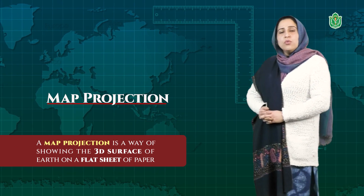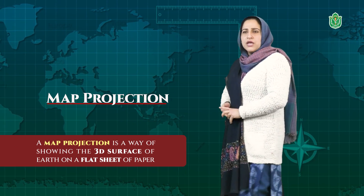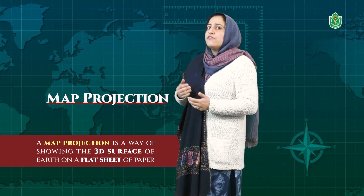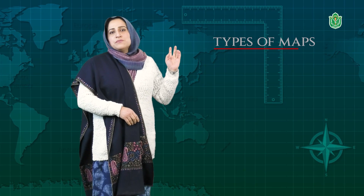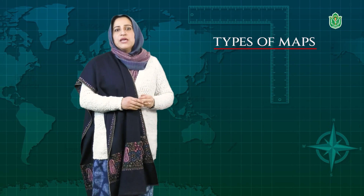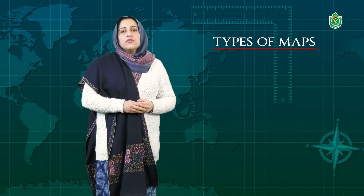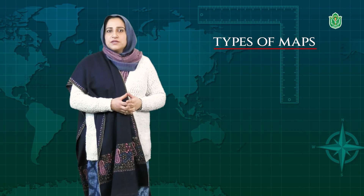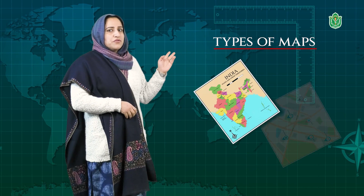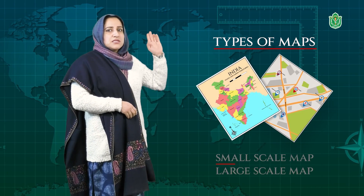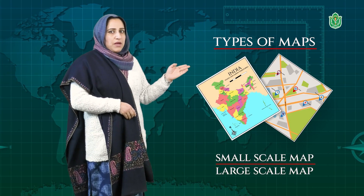Now we will come to the types of maps. Maps are very essential in helping us understand various features of the earth. According to scale, we have two types of maps: small scale and large scale maps.